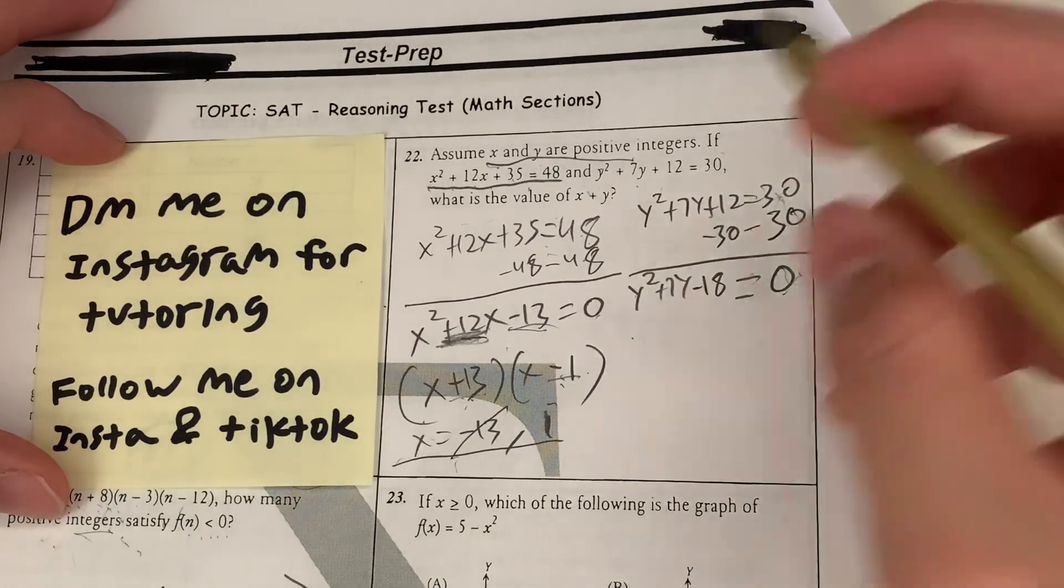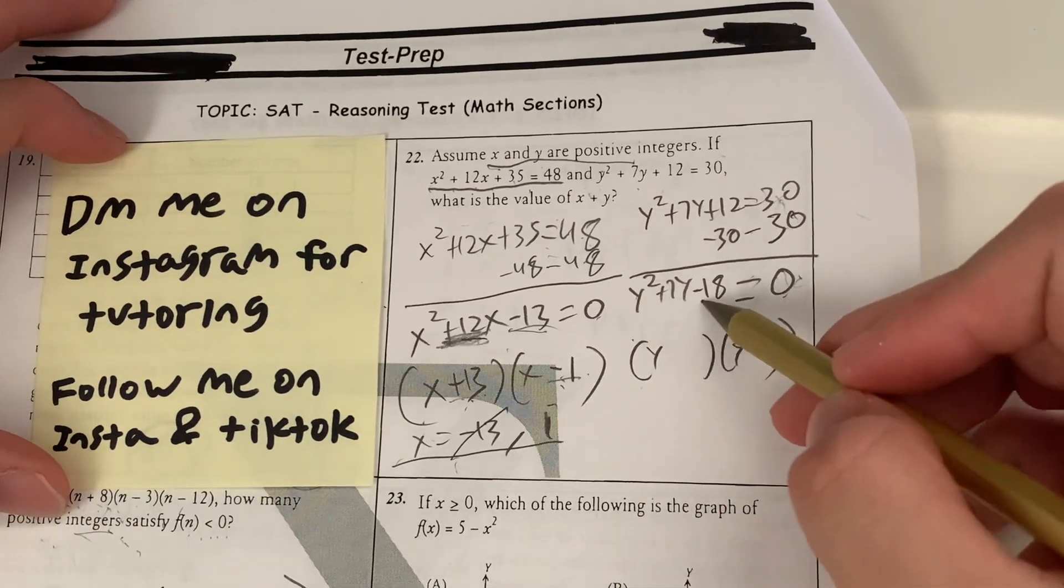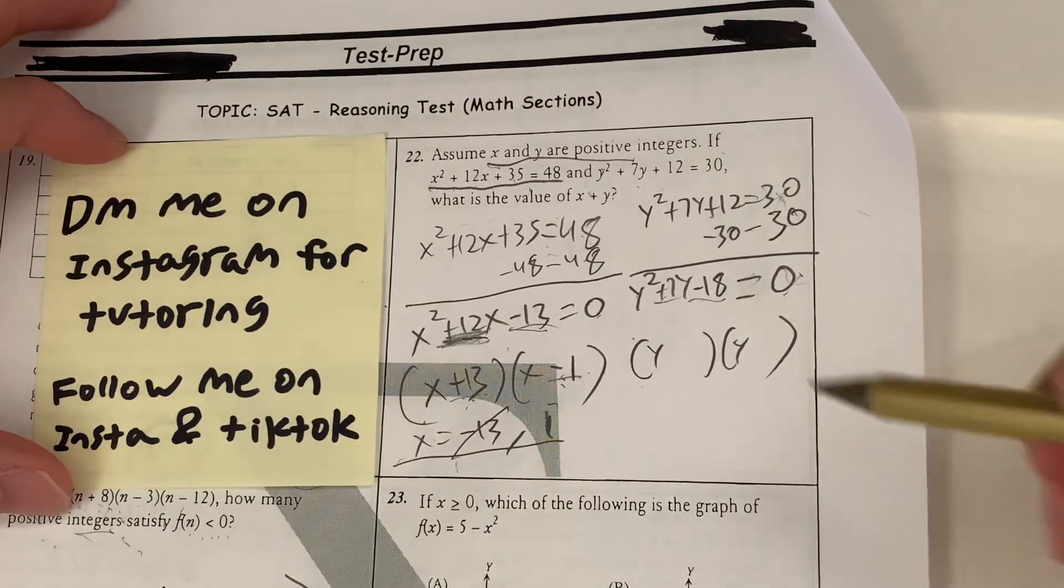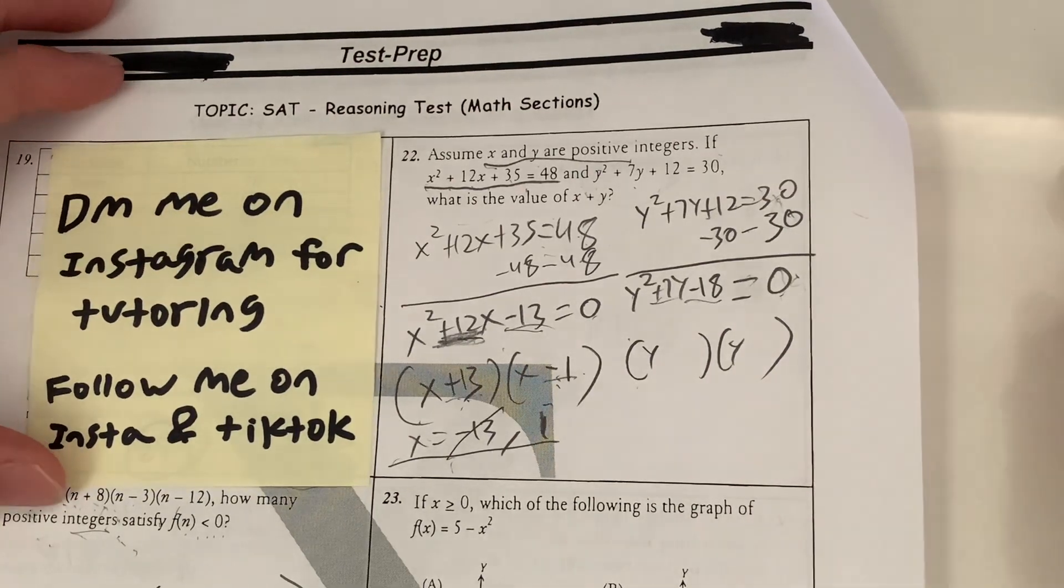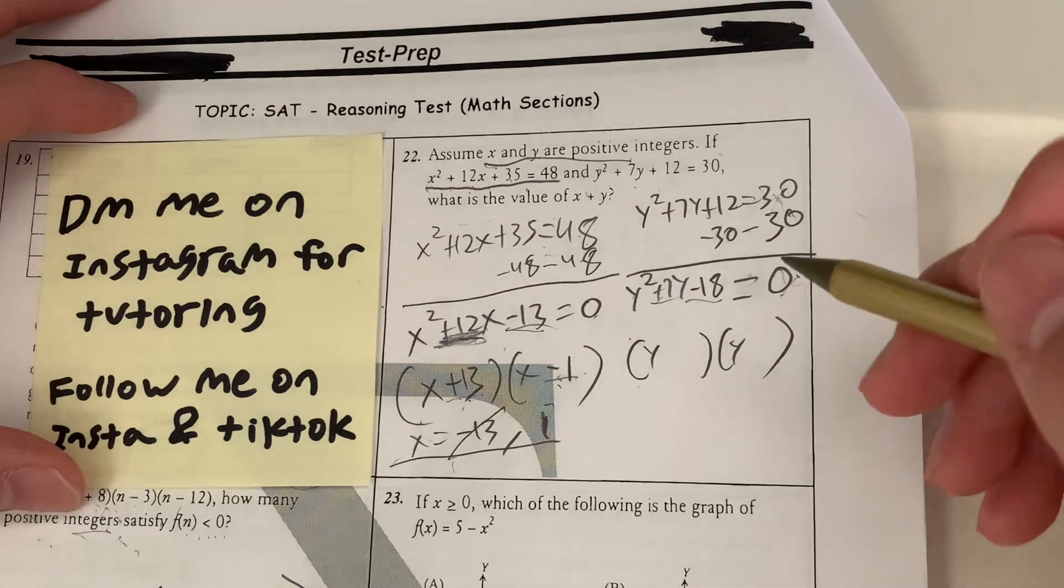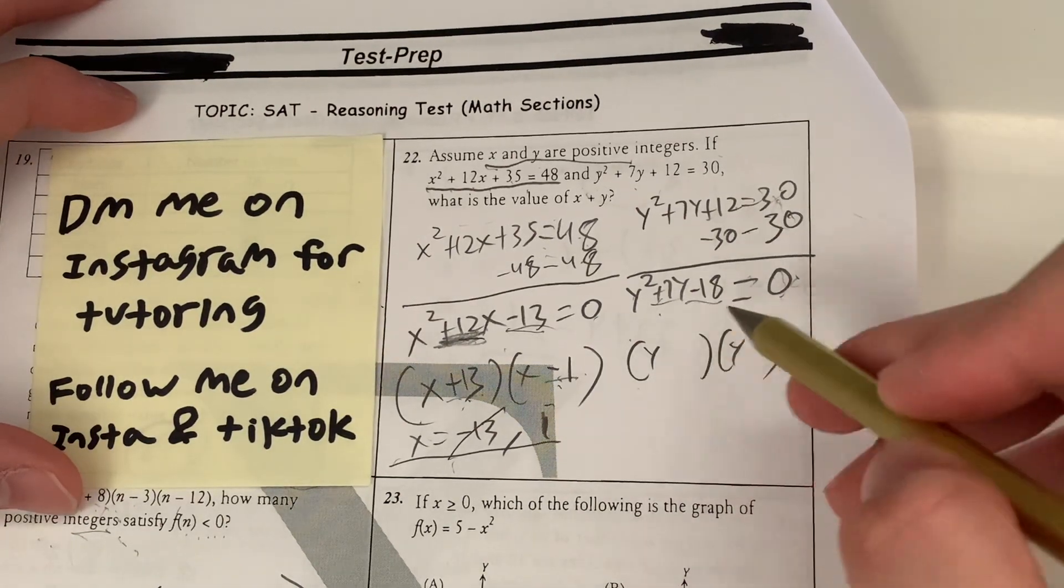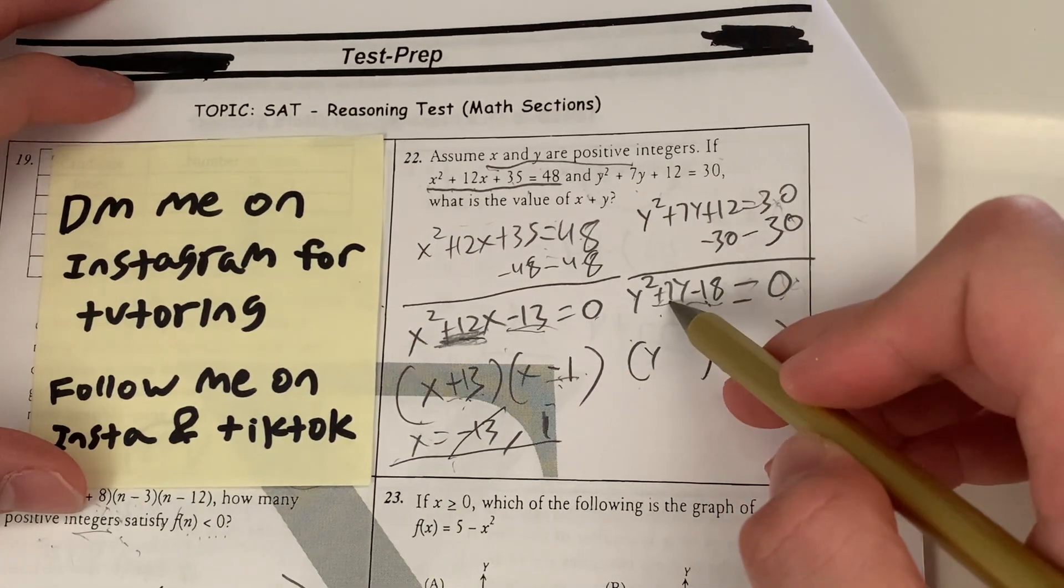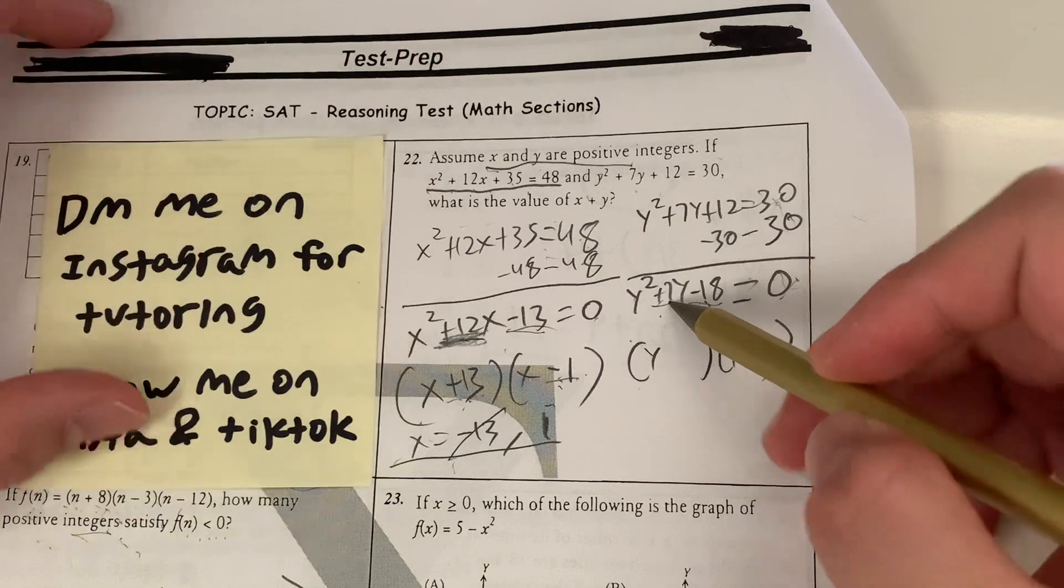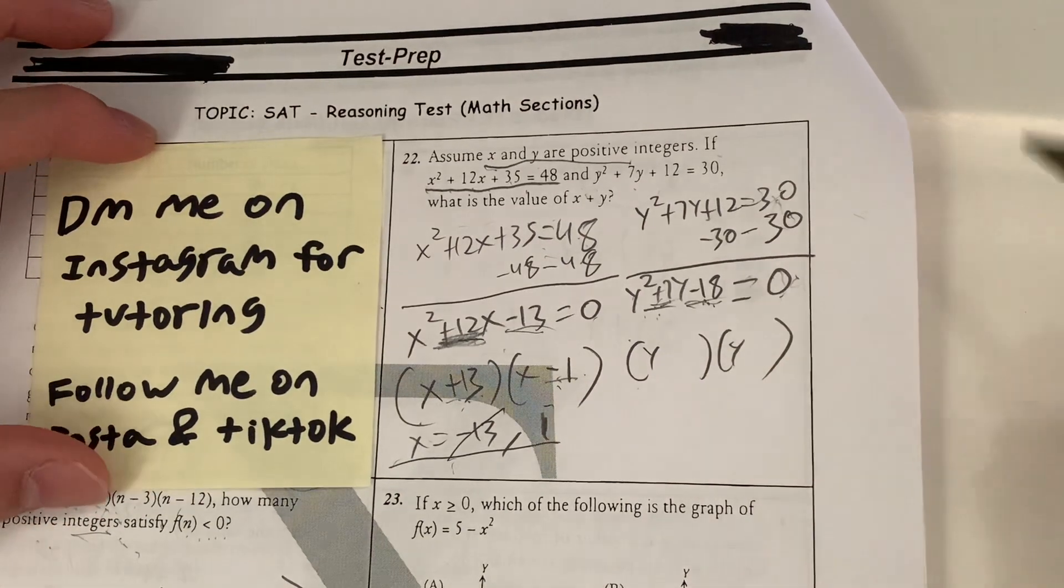Next, can I factor? I'm going to try that. So I'm going to put y and y. Now what multiplies to negative 18 and sums up to 7? I'm going to try 1 and 18. Does that work? 1 plus 18 is 19. 1 minus 18 is negative 17. That doesn't work. Let's try 2 and 9. Now 2 times negative 9 is negative 18. 2 minus 9 is negative 7. How about I try the other way around? 9 times negative 2 is negative 18. And 9 minus 2 is 7. So that aligns.